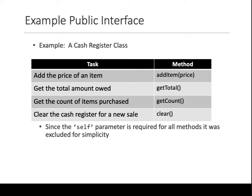Here we have an example of a cash register. We are going to define a class that mimics the functionality of a cash register. A cash register needs to add the price of an item, get the total amount owed, get the count of items purchased, and clear the cash register for a new sale. For each of these tasks you can define a given method. When you add the price of an item you supply a price, but for the other methods you don't need any input parameters.